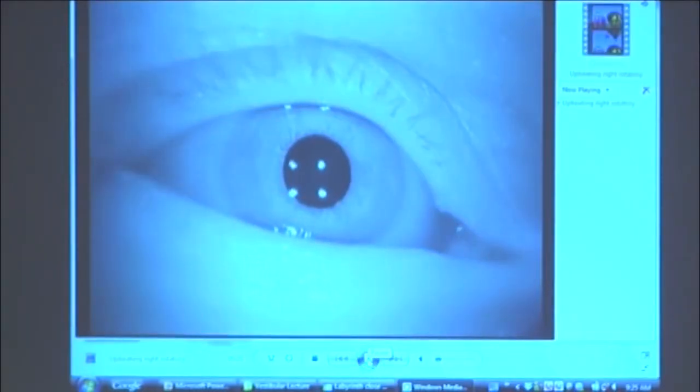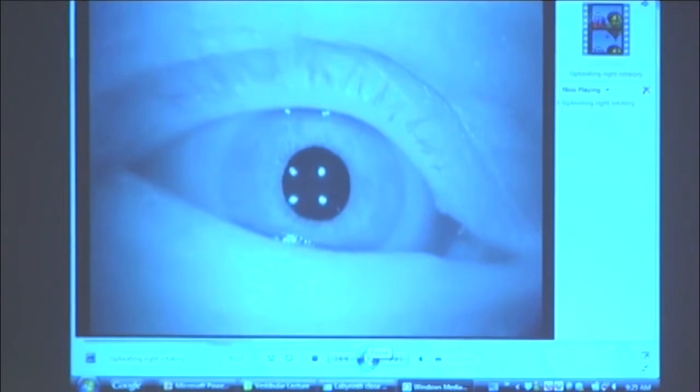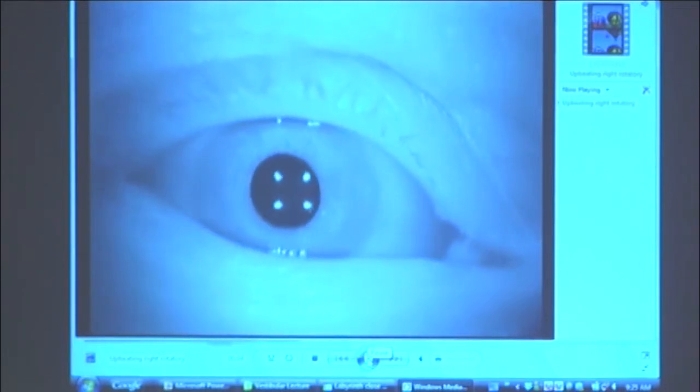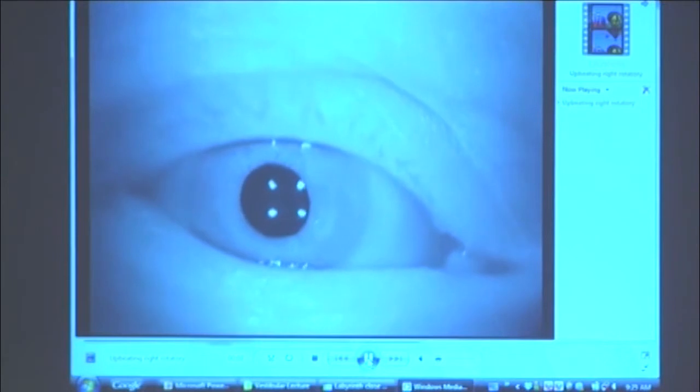Let's look at a right Hallpike. This is almost pure torsion. And then you can see it settles down, it starts slowing down, and they're like, oh okay, I'm all right now.